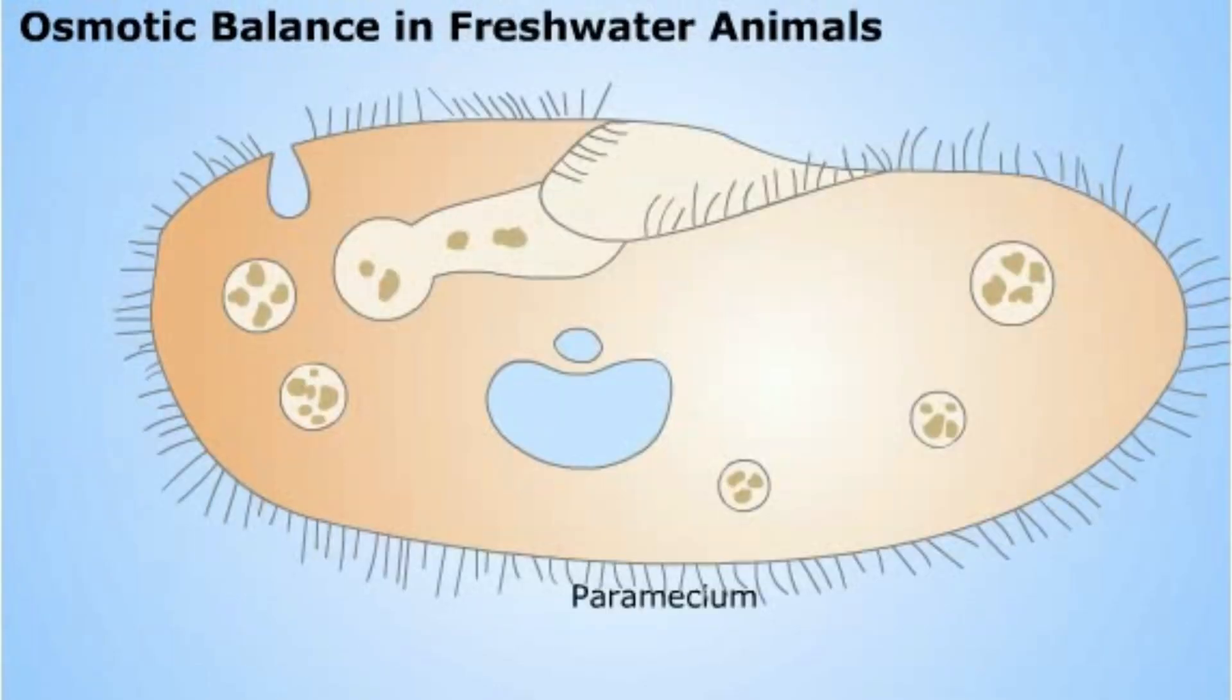Freshwater contains about one hundredth of the salt concentration of seawater, but water tends to diffuse from regions of low salt concentration to regions of higher salt concentration. So freshwater animals must have a way to prevent the surrounding water from entering their cells.